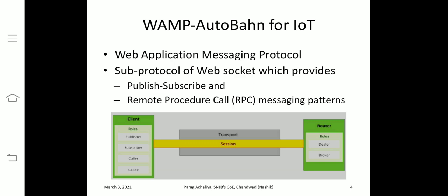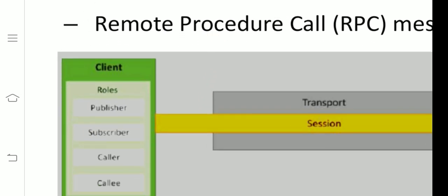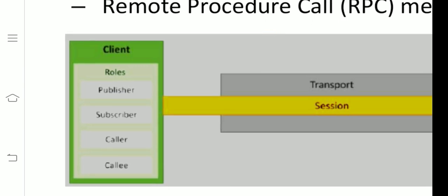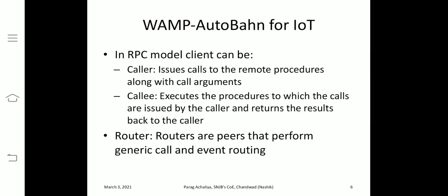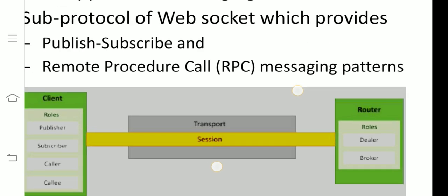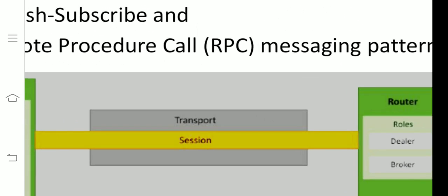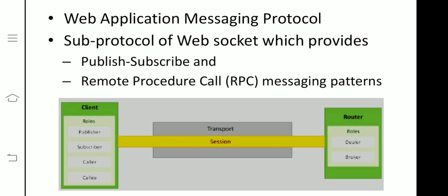In WAMP's architecture, there is one client and one router. The client can be treated as a publisher, subscriber, caller, or callee. There is a transport session responsible for establishing communication between these two devices. The router acts as either a dealer or a broker, providing responses to the client — whatever request the client sends, the response comes from the router, broker, or dealer.